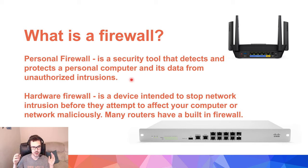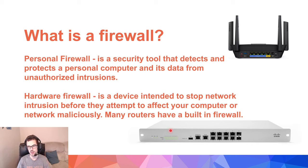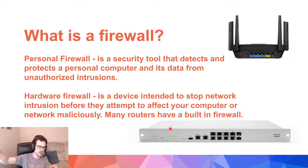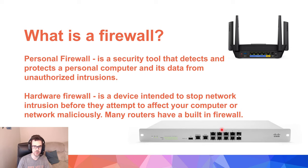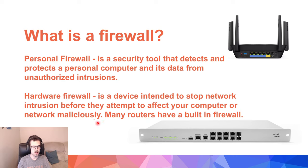Then there's something called a hardware firewall — a dedicated piece of equipment that goes right where the internet connection comes in. There's a coaxial or fiber cable that runs down the road and connects to the building. When it comes inside, it connects to your router. In a big network or building, they will have a hardware firewall — a device intended to stop network intrusion before it can affect computers on the network maliciously.